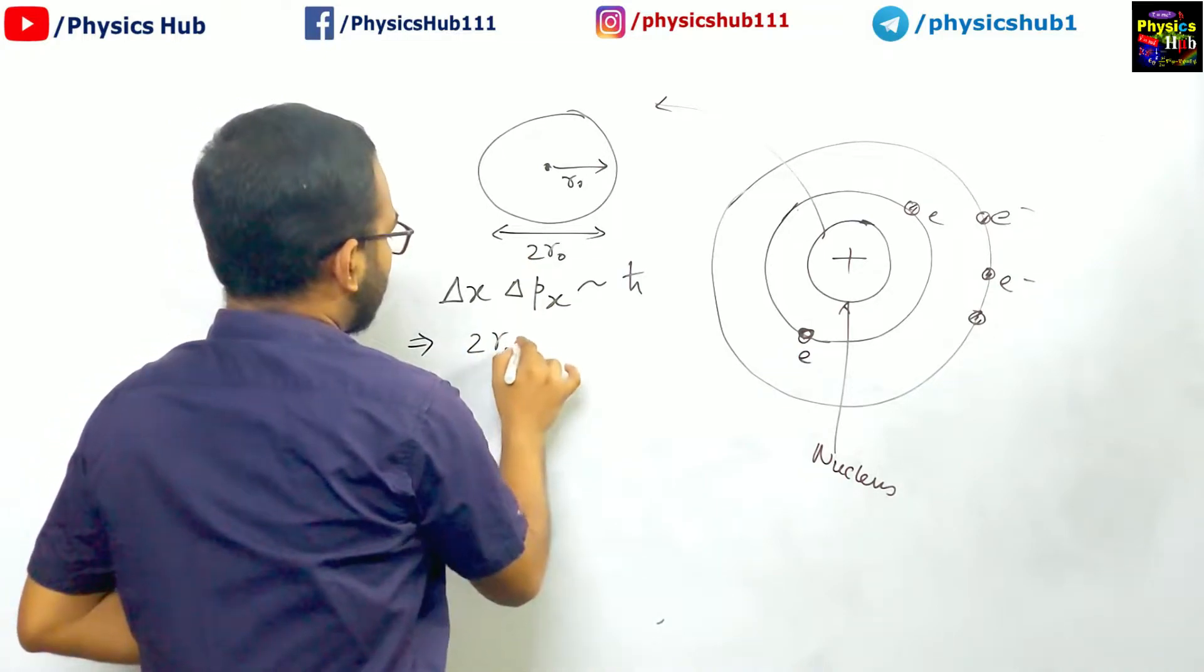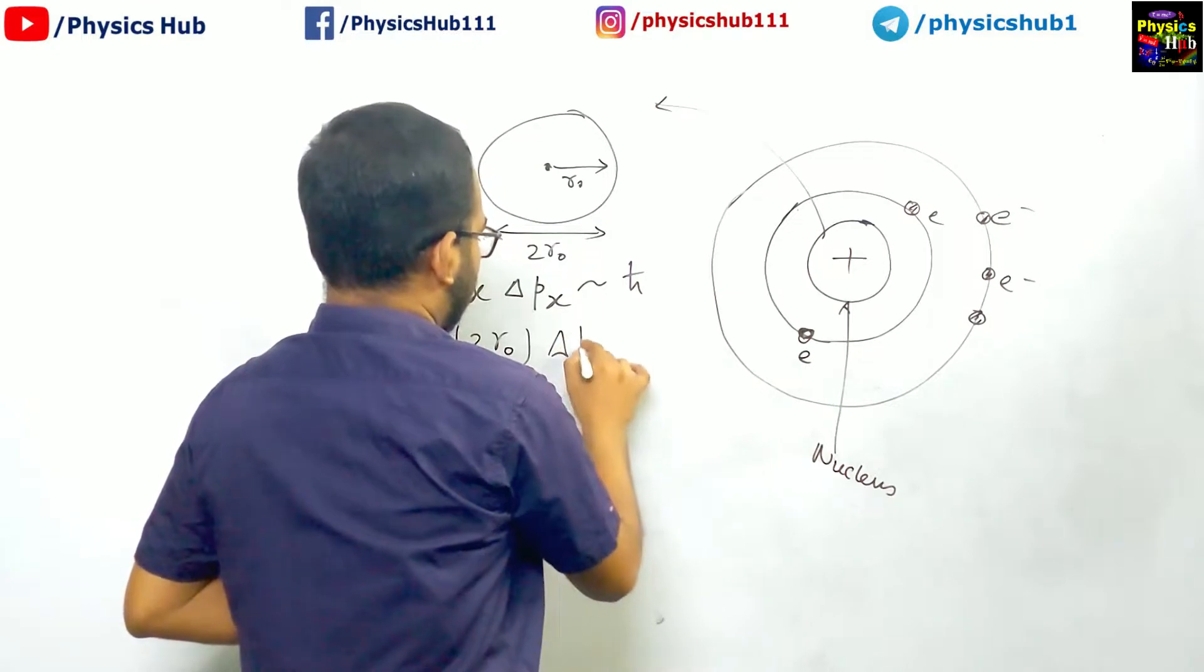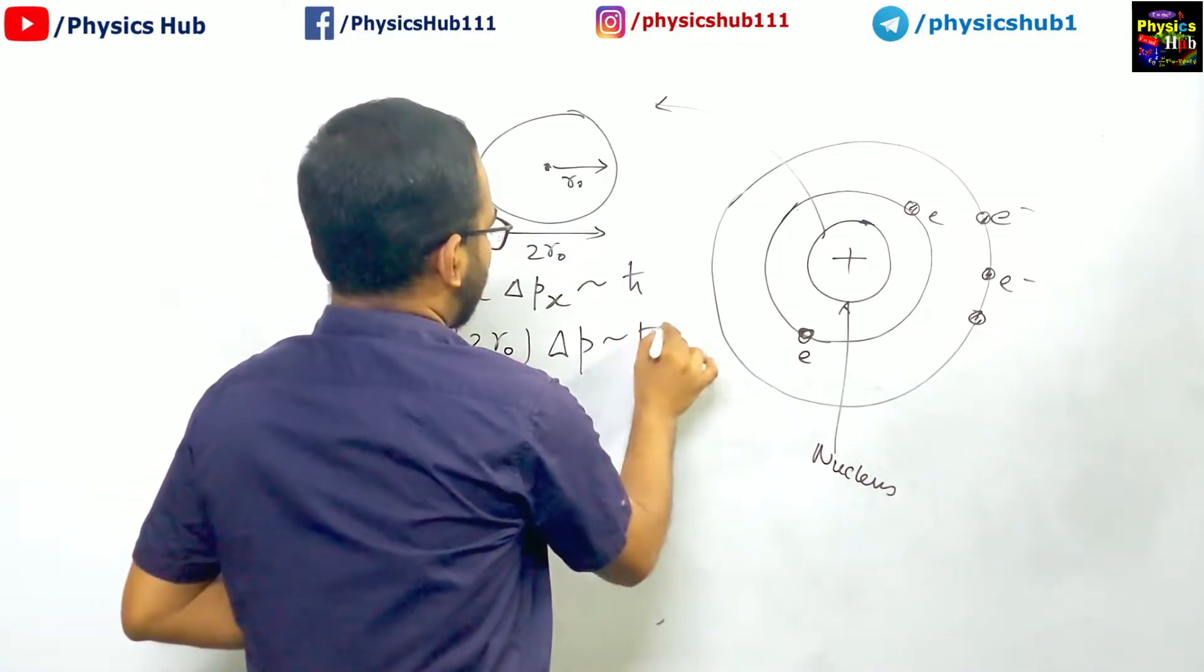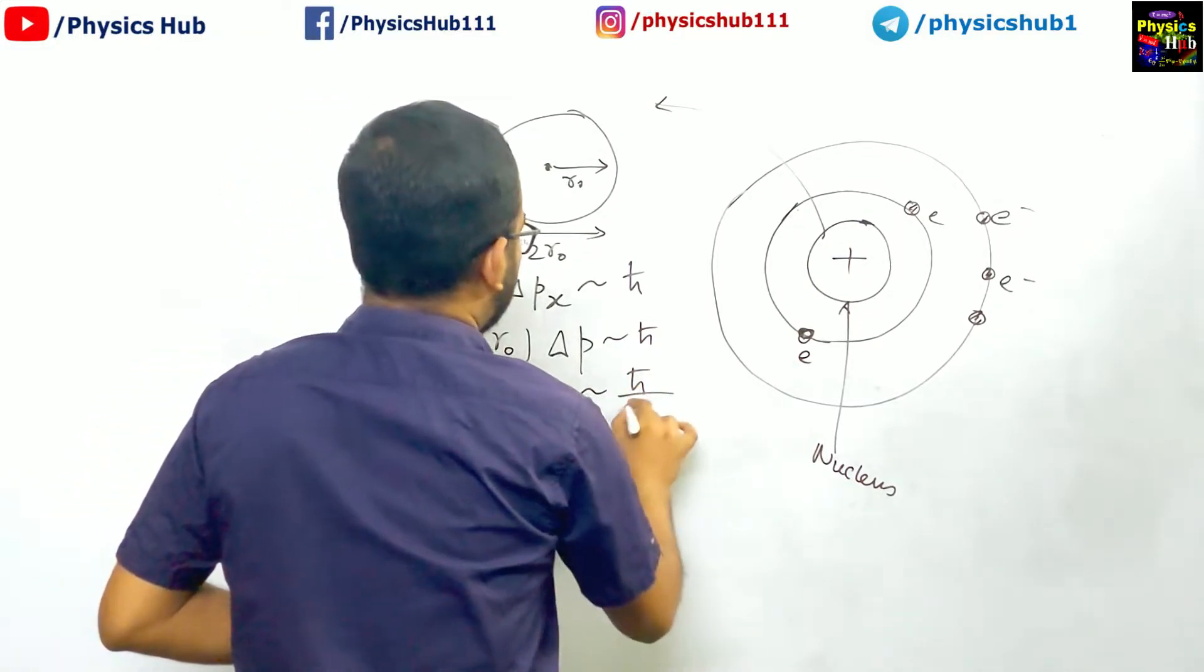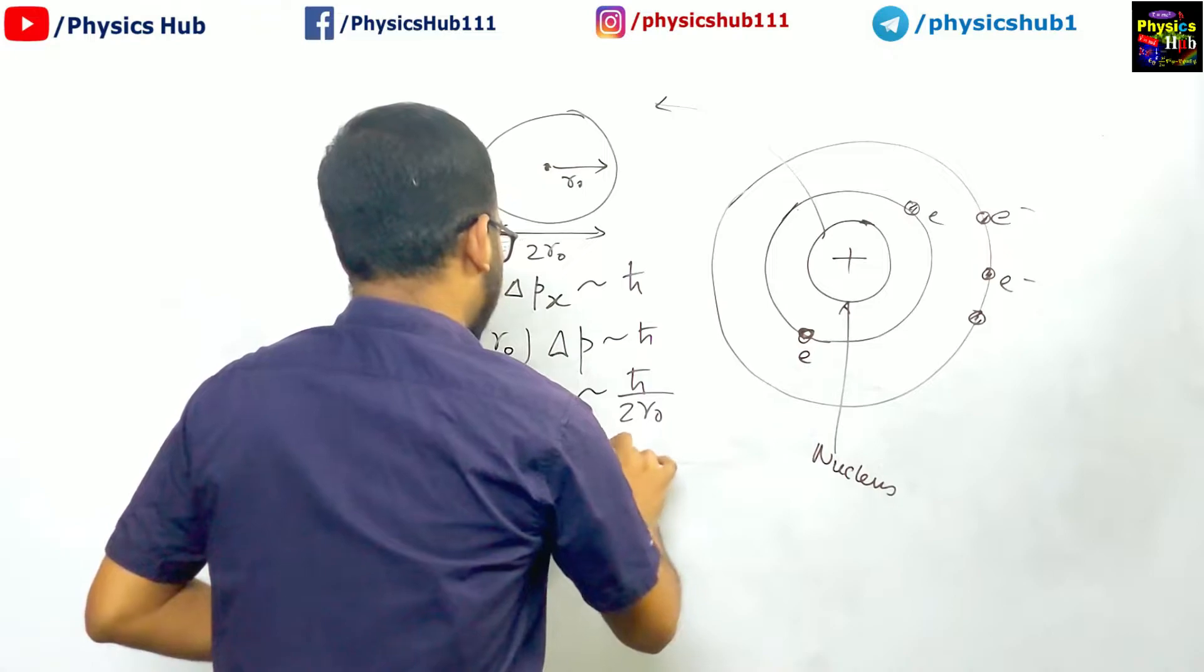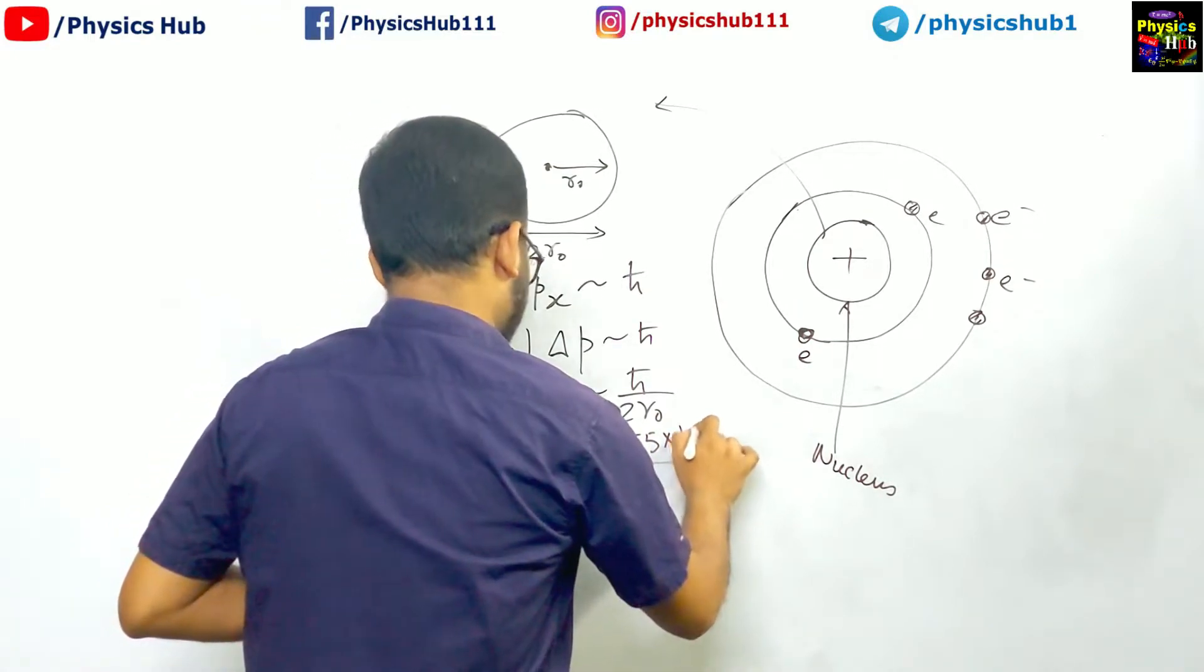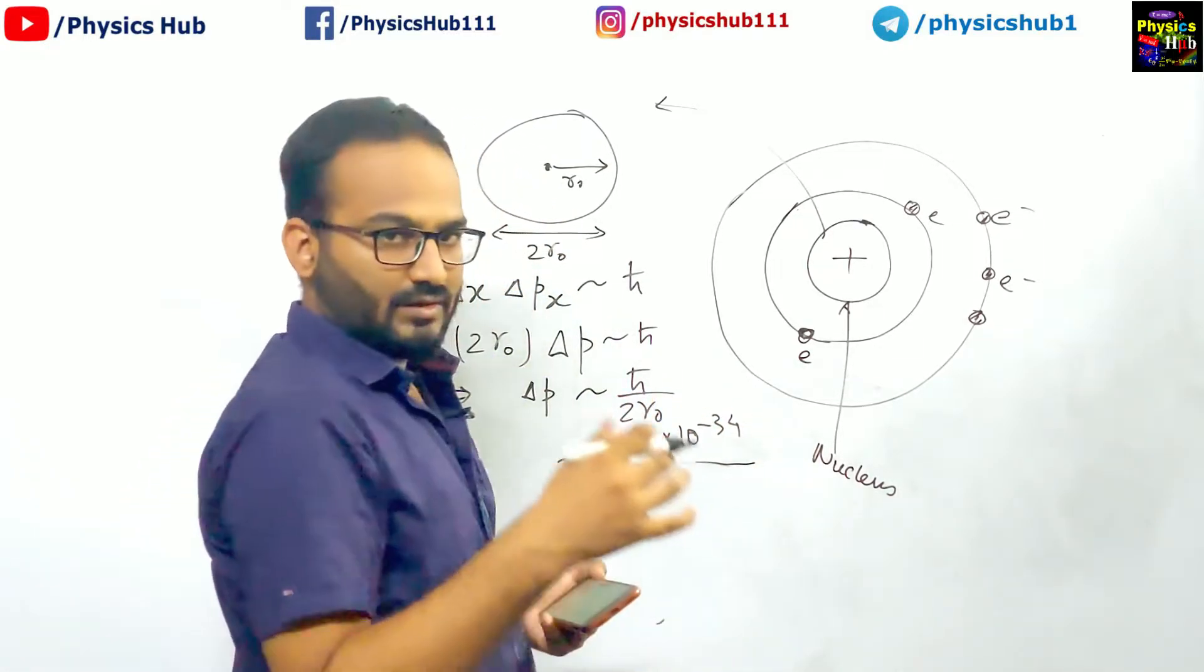And delta px equals, let us write delta p. So this equals h-cut from here. We are getting the value of delta p as h-cut upon twice r0. Now we know the value of h-cut. It is 1.055 into 10 to the power minus 34 in standard units.